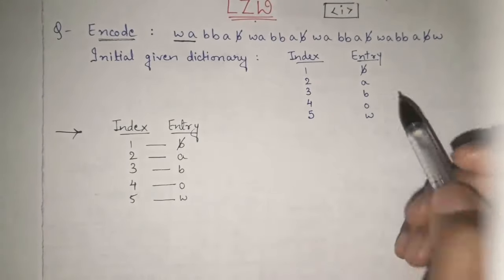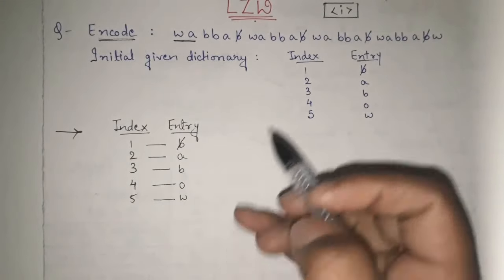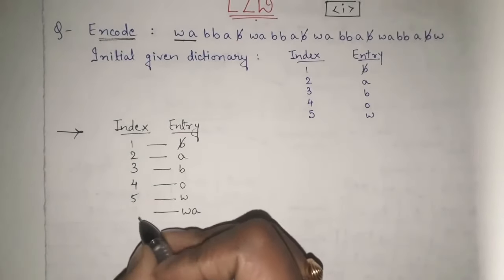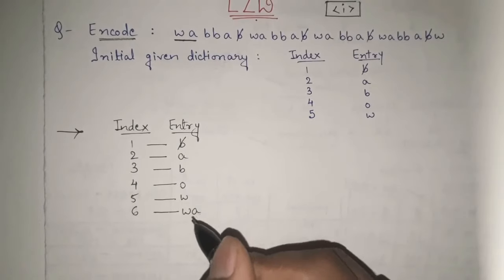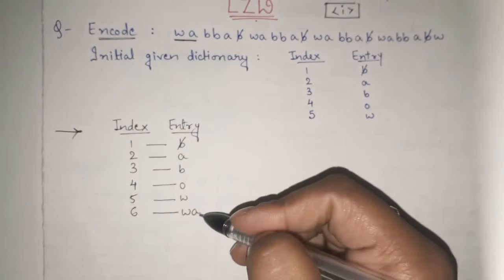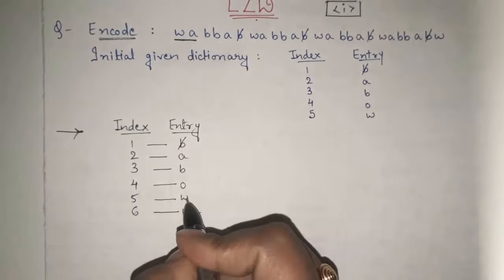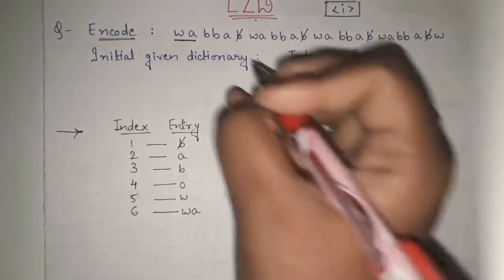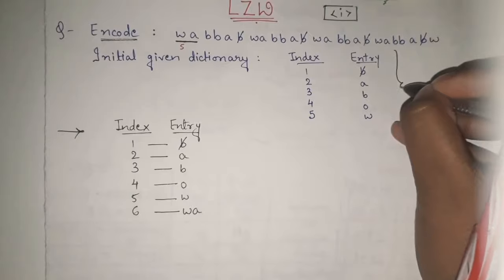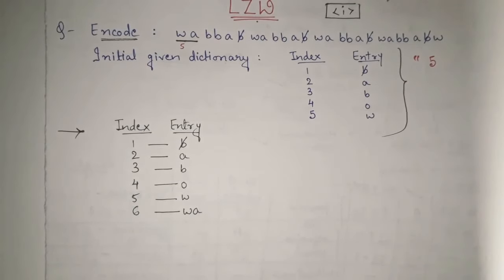Now we are starting our example. We have rewritten the given initial dictionary. The first character is W. W is already present in our dictionary — it is already encoded. So now I will take the doublet WA. Is WA already present? No. So I will add WA and it will become my sixth index. I have to send the code for W only, which is 5. So the first element in my encoded sequence is 5.